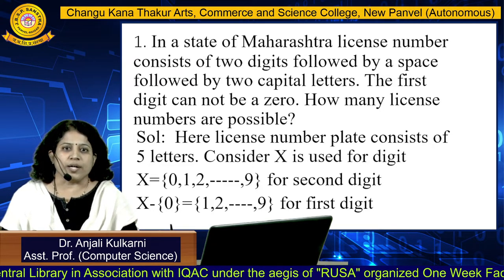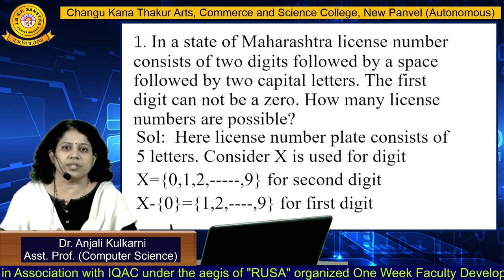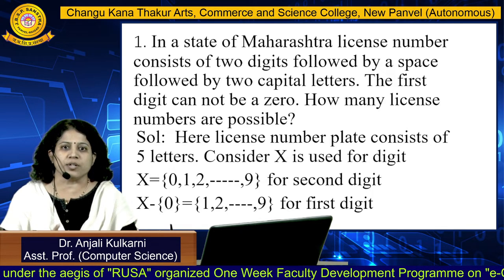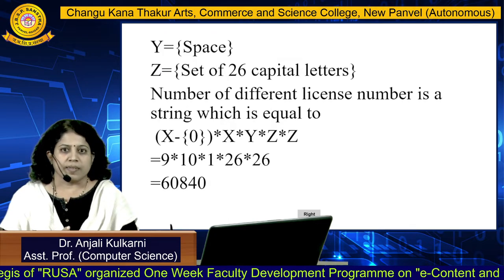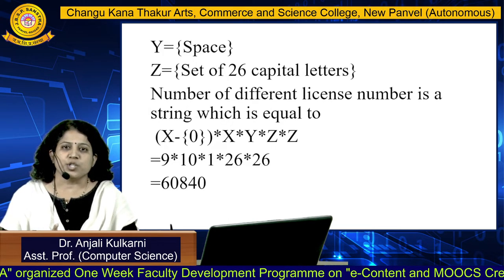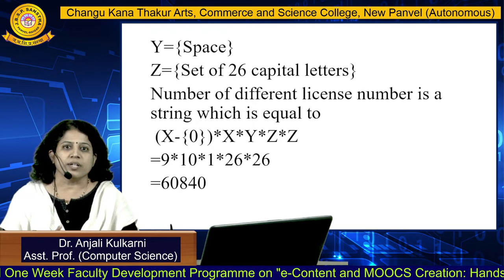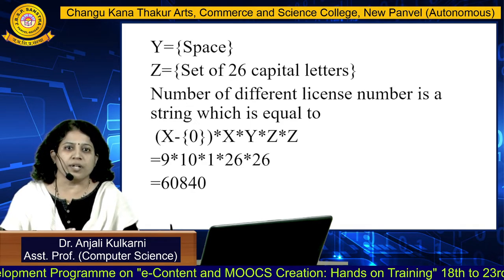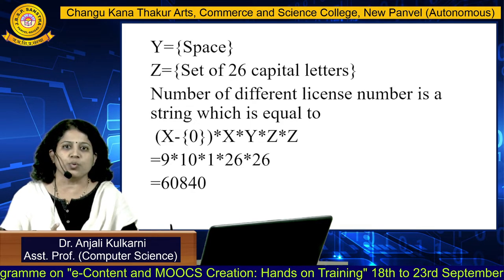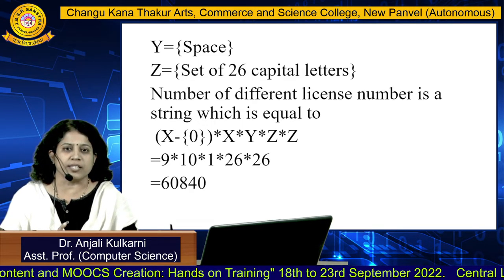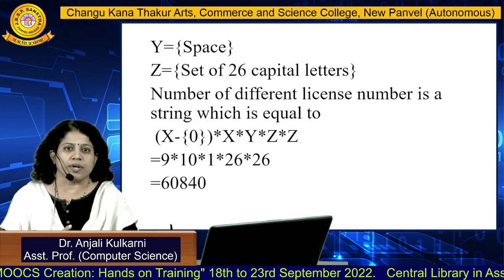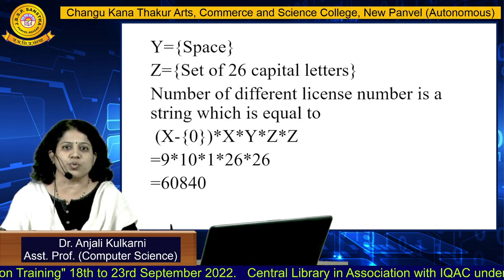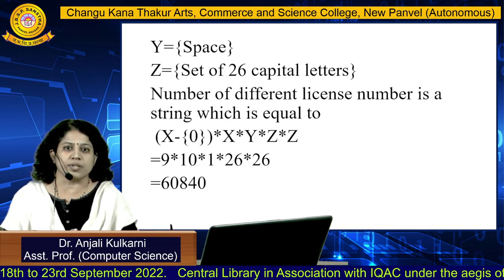In this case there are five positions. For the first digit, the condition is it cannot be zero, so its value is 9. For the second digit we consider all digits from zero to nine, so its value is 10. For the third position a space is there, so its value is 1. For the fourth and fifth positions, there are 26 capital letters (A to Z), so 26 into 26. The total number of different license numbers is 9 × 10 × 1 × 26 × 26 = 60,840.